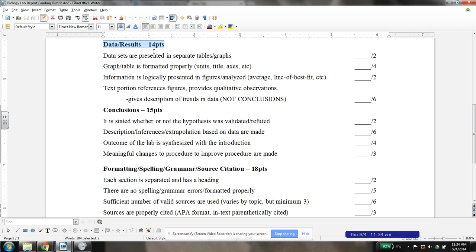So the data and results section is worth 14 points. It is very distinct from our conclusion section, which is another 15 points, and it's really where you are going to dump all of your graphs, your charts, and any illustrations of what happened, as well as including a text portion that will reference those things and provide any descriptions of trends and data.